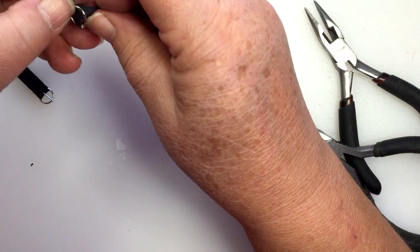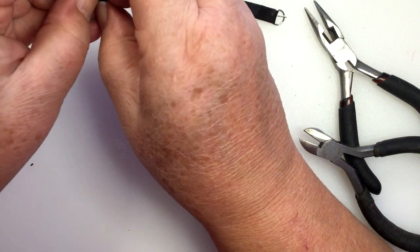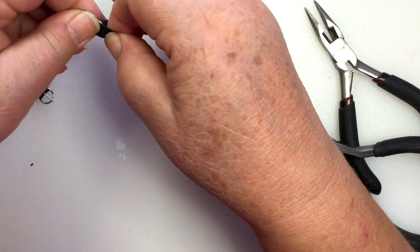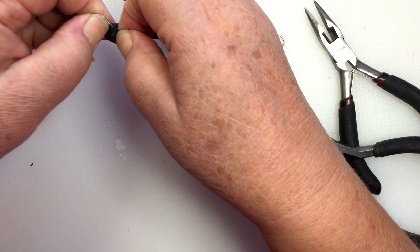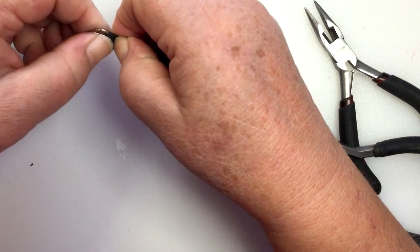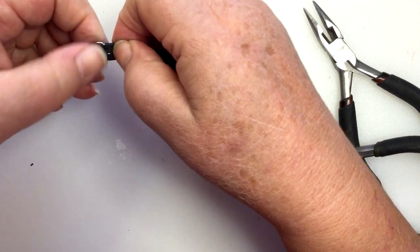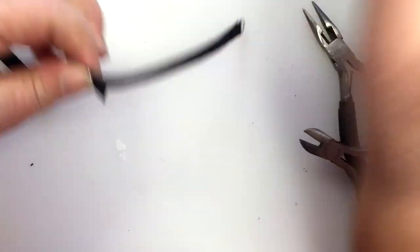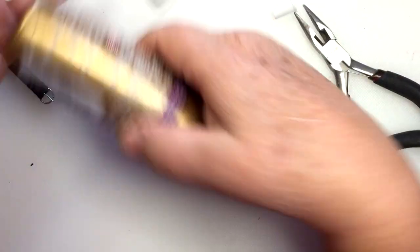There we go. Make sure that eye or tongue, the eye of the tongue, is in that slit on both sides, and now I can glue it in place.